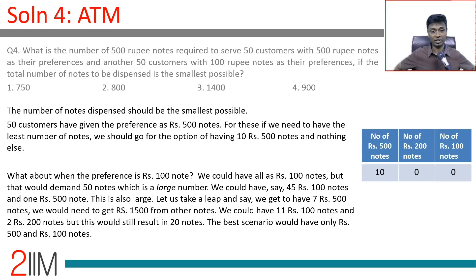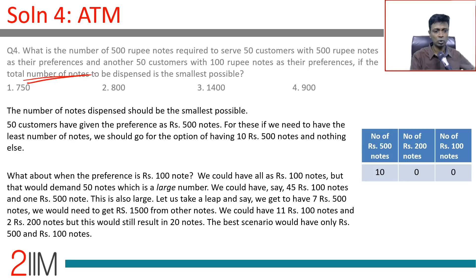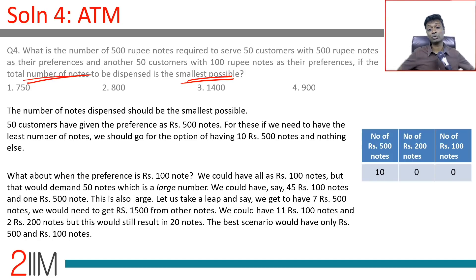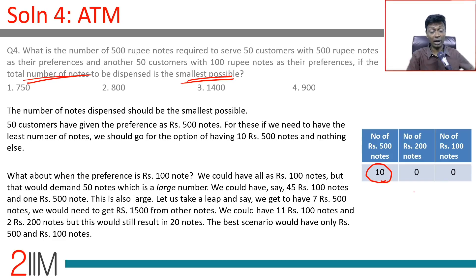Question 4: What is the number of 500 rupee notes required to serve 50 customers with 500 rupee notes as their preference and another 50 customers with 100 rupee notes as their preference, if the total number of notes dispensed is the smallest possible? For minimum total notes, use as many high-denomination notes as possible. For 50 customers with 500 as preference: give each 10 × 500 rupee notes. That's 10 × 50 = 500 notes of 500 rupee denomination.